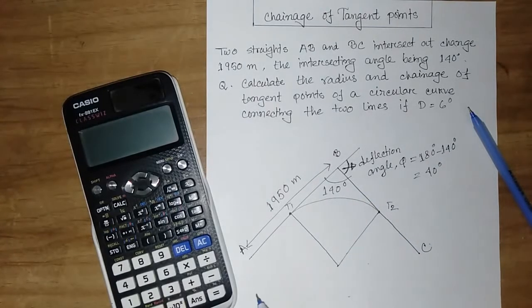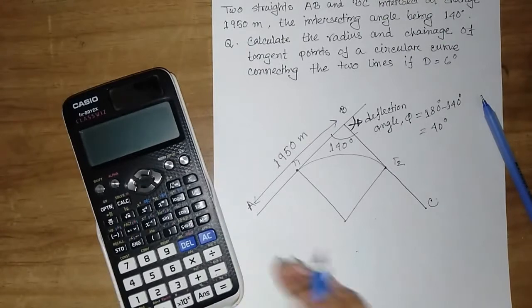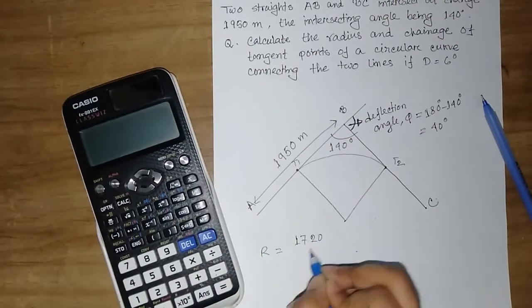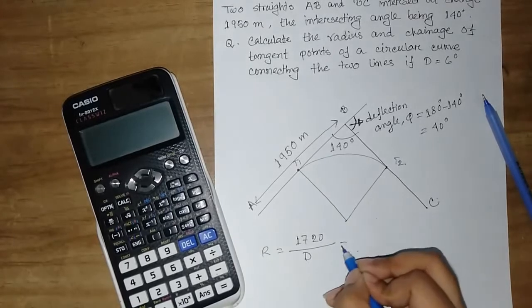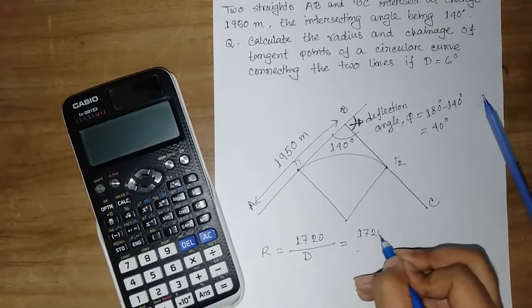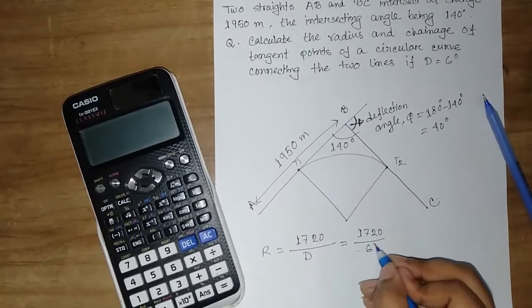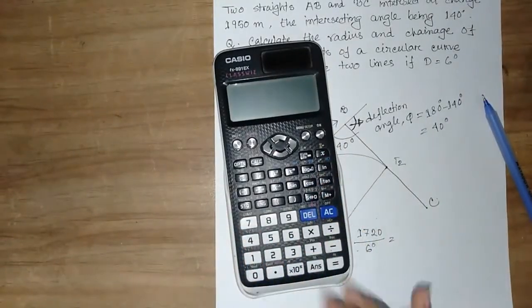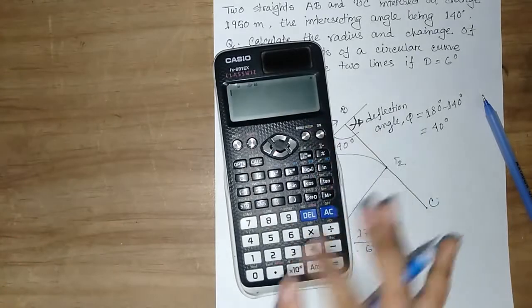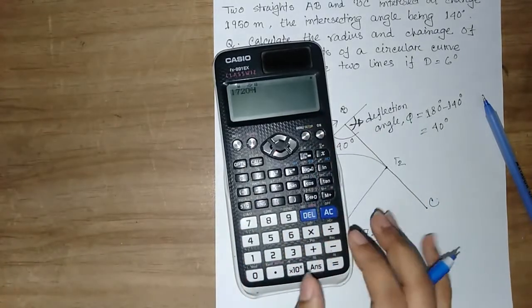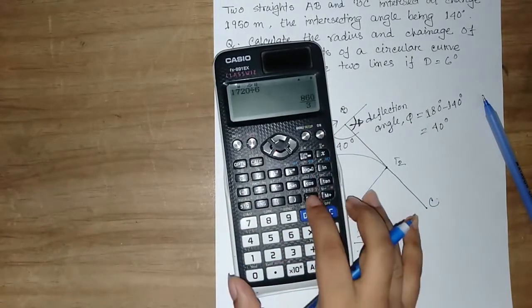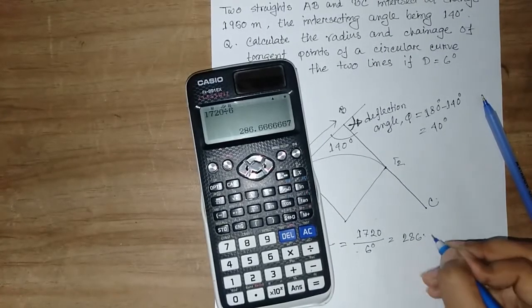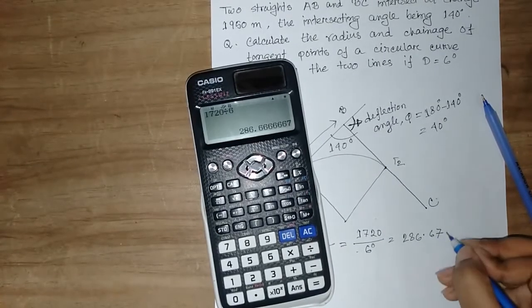Radius R is equal to 1720 divided by D, which is equal to 1720 divided by 6 degrees, which is equal to 286.67 meters.